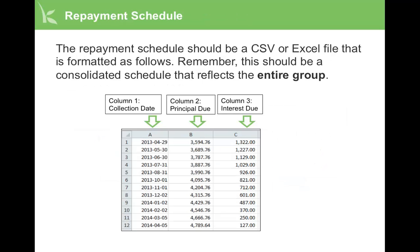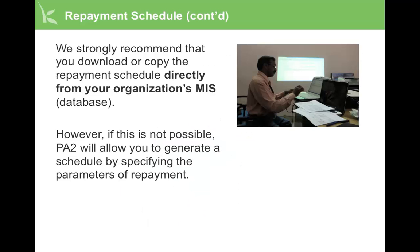The repayment schedule should be a CSV or Excel file formatted as follows: in column 1, the collection date; in column 2, principal due; and in column 3, interest due. Please remember that this should be a consolidated schedule for the entire group. We strongly recommend that you download or copy the repayment schedule directly from your organization's MIS, your database. However, if this is not possible, PA2 will allow you to generate a schedule by specifying the parameters of repayment.